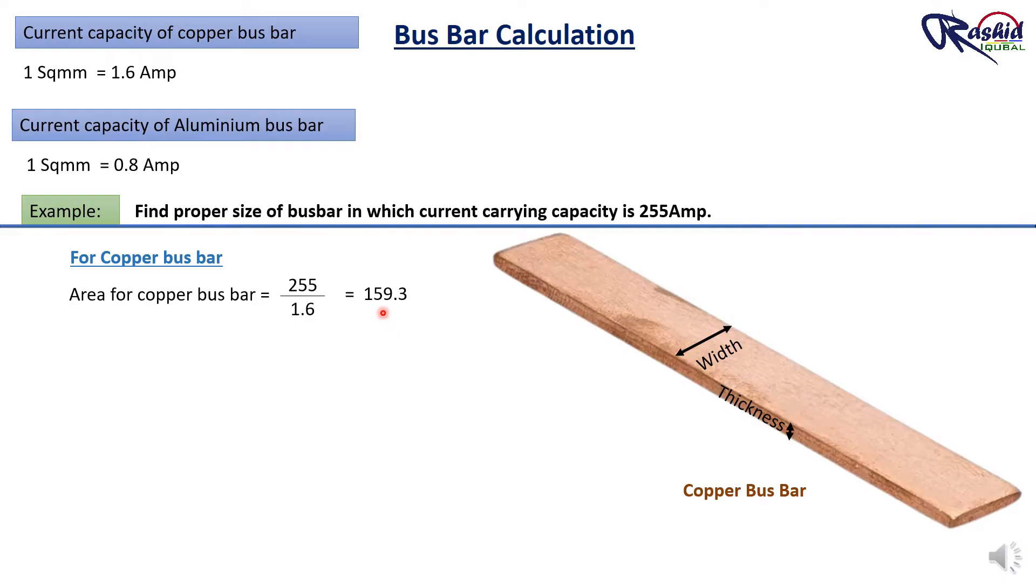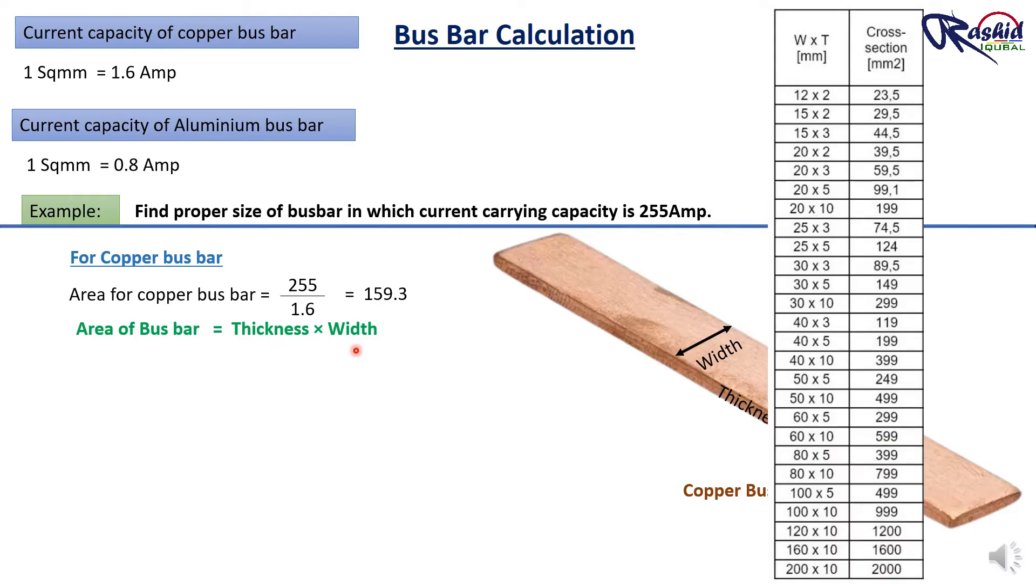Now to find the suitable size of copper busbar, we use this formula. Area equal to thickness multiplied by width. Through this busbar size chart, we can select thickness of busbar. I am selecting here 10 mm thickness. Because this is the standard thickness of busbar which can generally be used in electrical panel. Or you can select thickness as per current capacity.